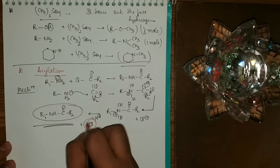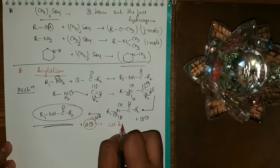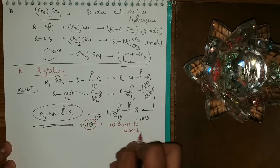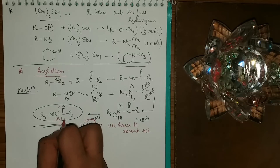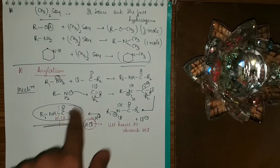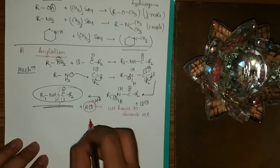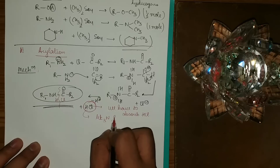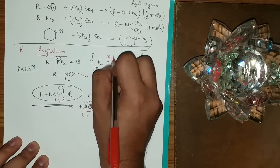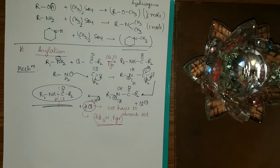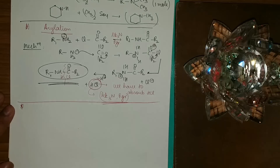HCl formed in acylation must be absorbed because it can do the reverse reaction — breaking the amide bond and regenerating the reactants. To absorb HCl, we use Et3N or pyridine. These reagents will also be mentioned in the reaction conditions to give me the final product.